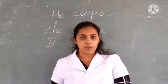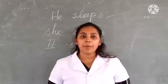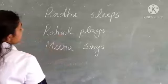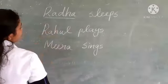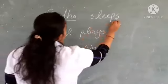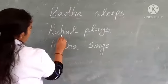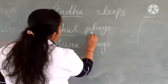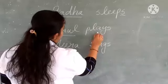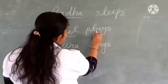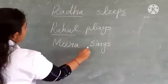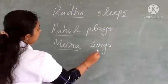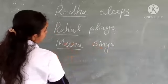When we are using the verb with a proper noun, we need to add S with the verb. So 'play' becomes — Rahul plays. Meera is a proper noun, so we add S with the verb 'see' — Meera sees.